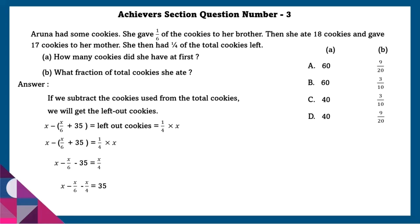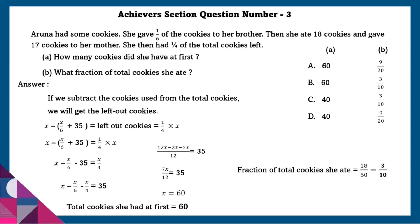Bringing X to one side and simplifying, we can get the value of X, that is 60. So total cookies she had at first is equal to 60. Using this, we can find the fraction of total cookies she ate: 18/60, which equals 3/10.